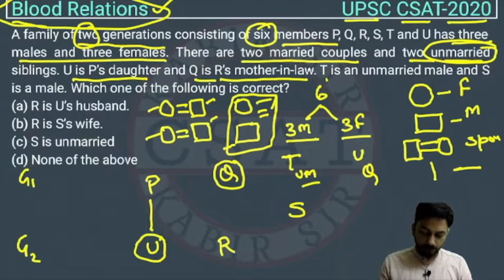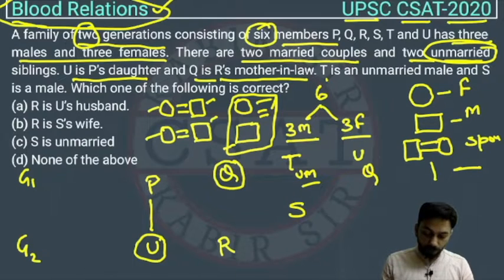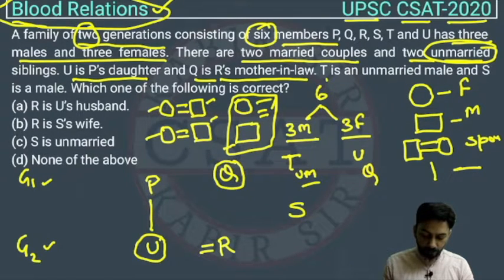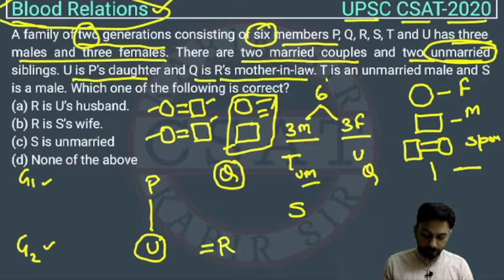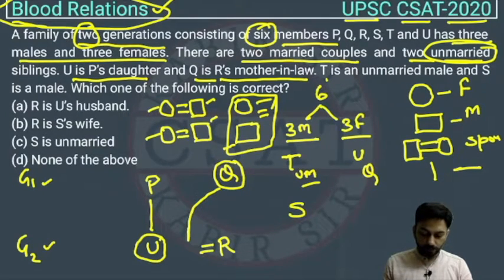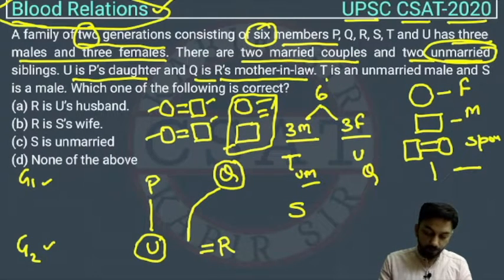Now we have to find which option is correct. There are two married couples — one in generation 1 and one in generation 2. R is the daughter-in-law or son-in-law, because Q is the mother-in-law. Q has a son or daughter who is married to R. That accounts for 4 people, leaving 2 remaining from the total of 6. Q will marry P, since P is in generation 1 and there is only one family.